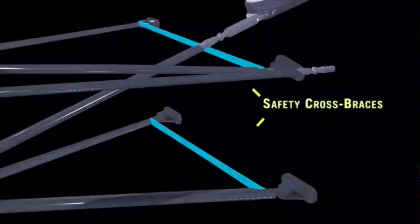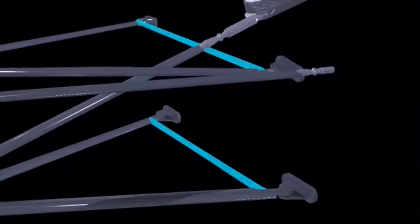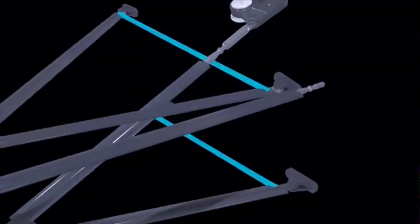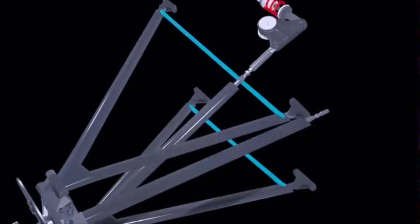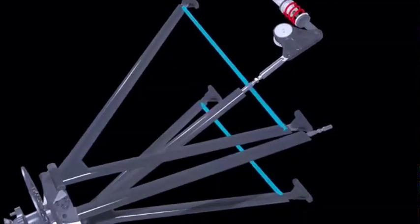The safety cross braces welded between the inner ends of the A-arms provide support, but more importantly they help keep the A-arms from punching through the chassis and into the driver's compartment in the event of an accident.